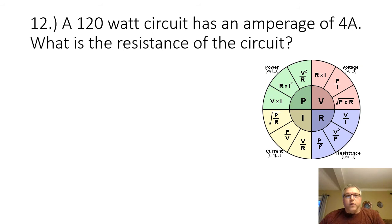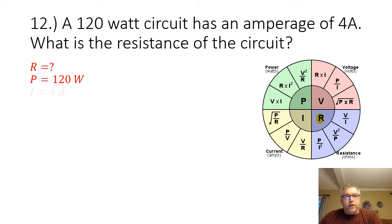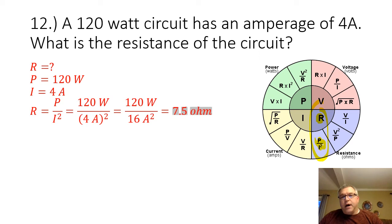Number 12: a 120-watt circuit has an amperage of 4 amps. What is the resistance of the circuit? We are being asked to find the resistance. We are given the power at 120 watts and the current at 4 amps. Our formula is R equals P divided by I squared.